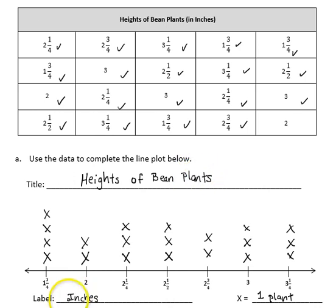And here's my finished line plot. You can see that the first measurement has the most. There are 4 plants that are at the 1 and 3/4 inch mark, but the rest of the data is pretty evenly spread out, so I wouldn't say that there's any particular measurement that's more dominant than the others on this line plot.